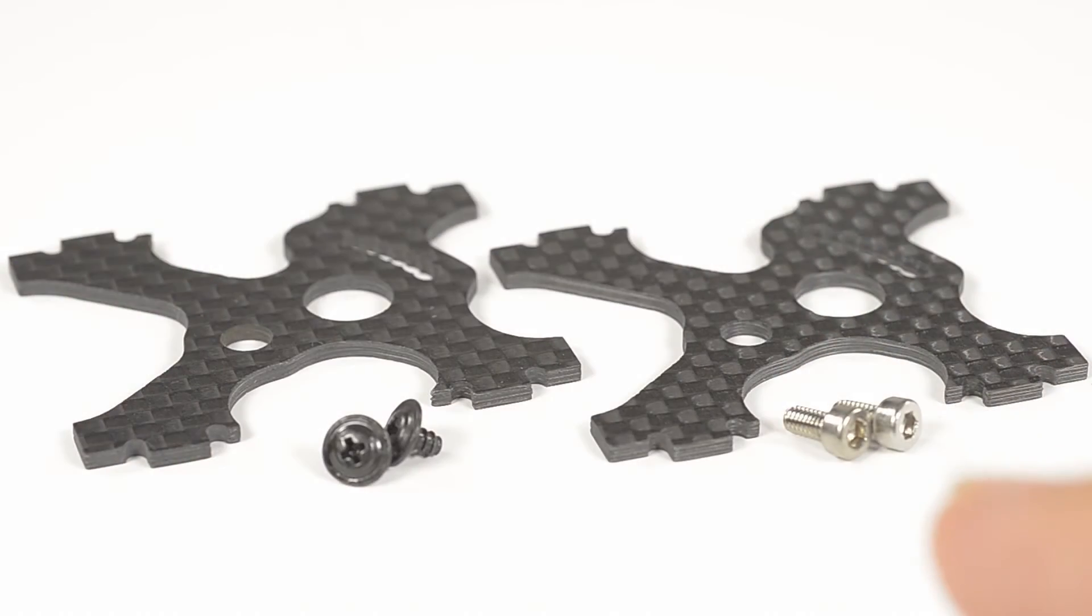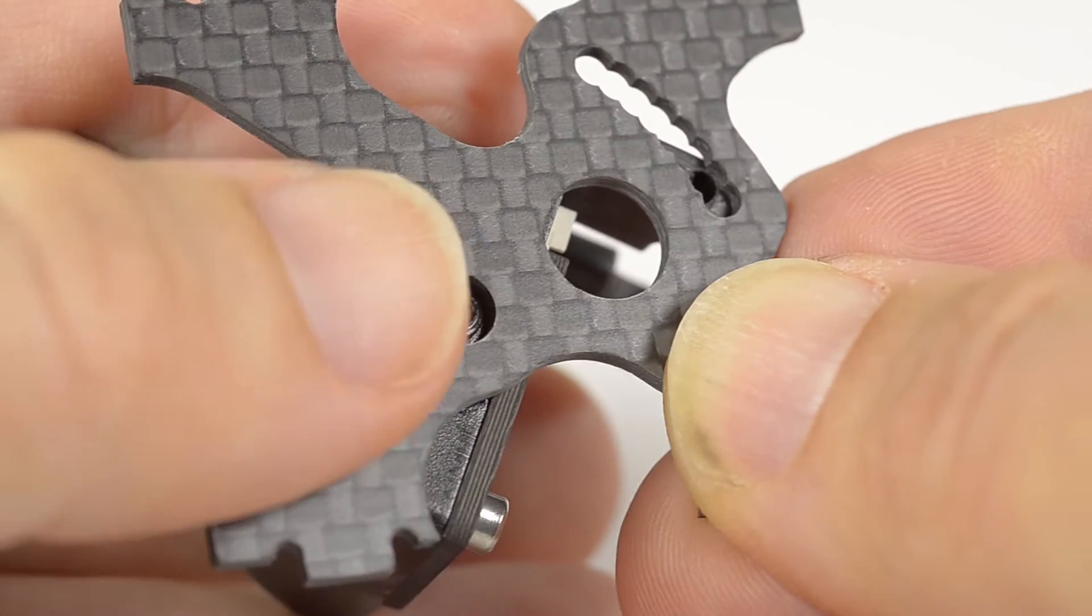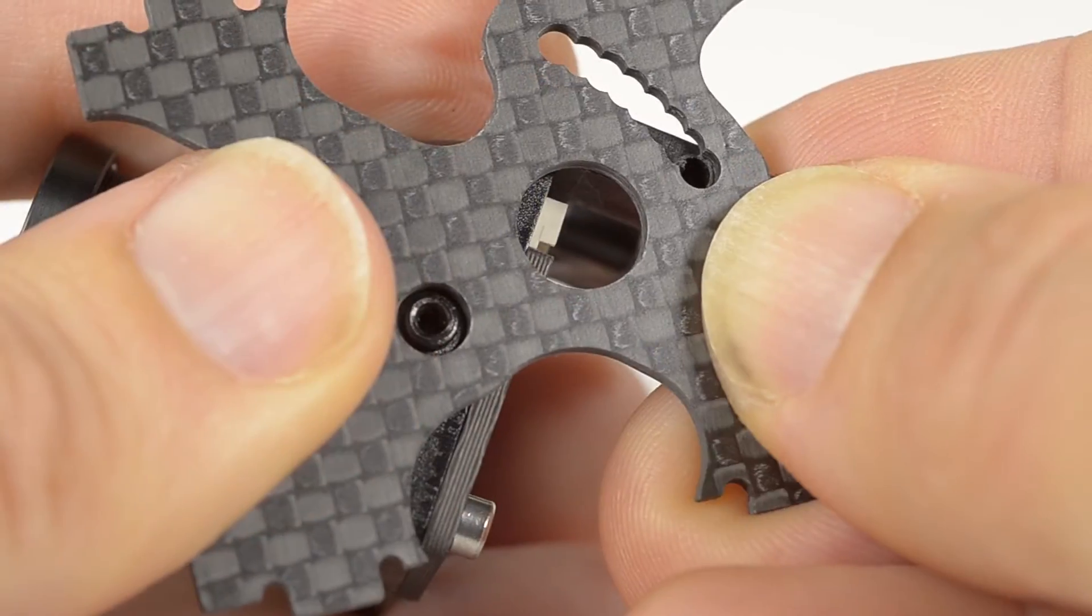Take the two K or X mounts and two 2.5 by 5 millimeter screws plus the side screws that came with the camera. Mount the side plates to the side of the camera and line them up.